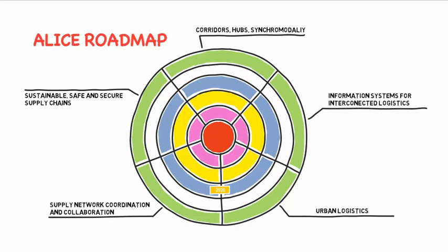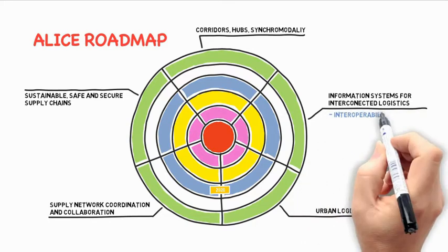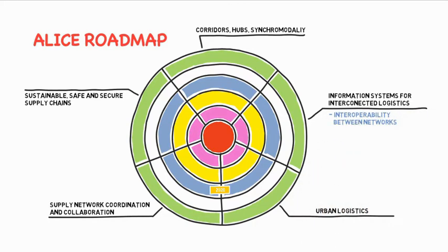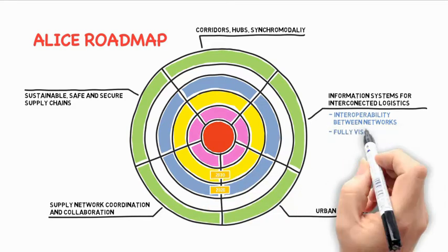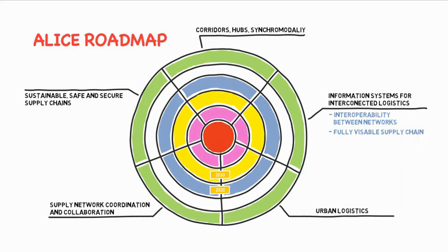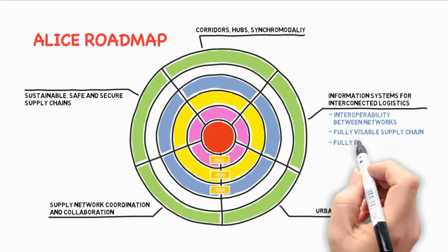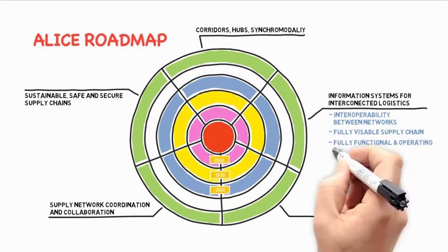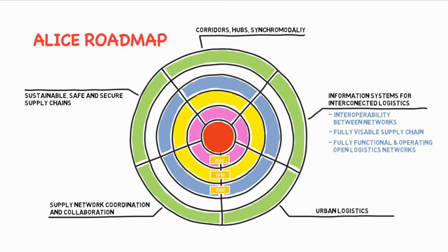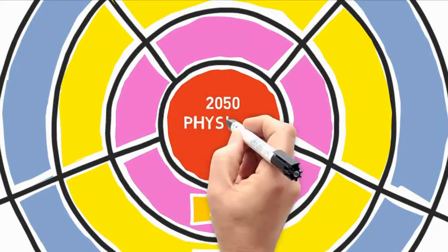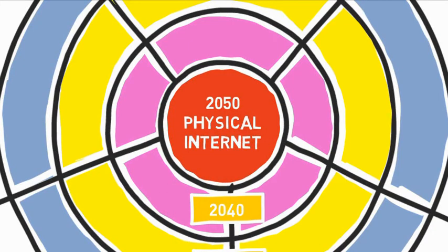In 2020, we'll have realized interoperability between networks and IT applications for logistics. Around 2030, the supply chain should be fully visible. 2040 marks the birth of fully functional and operating open logistics networks. All culminating in 2050, when physical Internet has become our new reality.